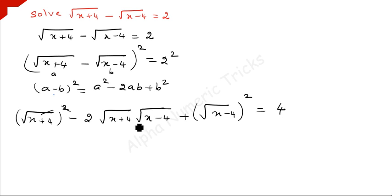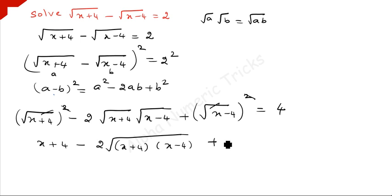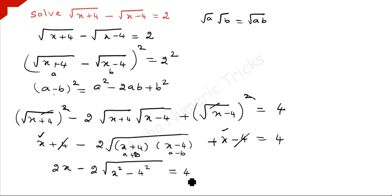The square root and the square get cancelled on both terms. So we have x plus 4 minus 2 times square root of x plus 4 times x minus 4, plus x minus 4, equal to 4. The plus 4 and minus 4 cancel, and x plus x is 2x. Using the identity that square root of (a+b) times square root of (a-b) equals square root of a squared minus b squared, we get 2x minus 2 times square root of x squared minus 16 equals 4.